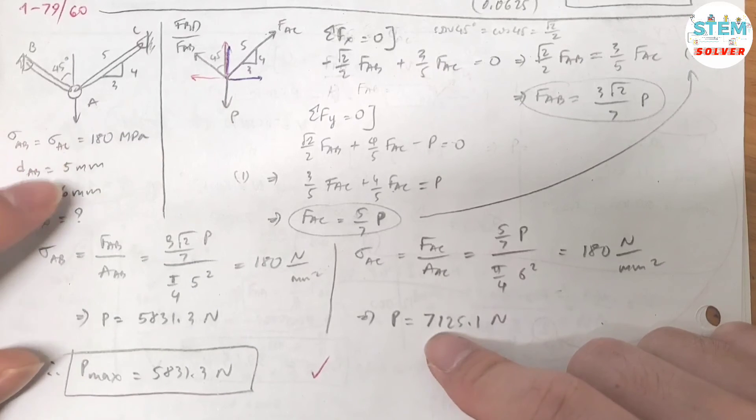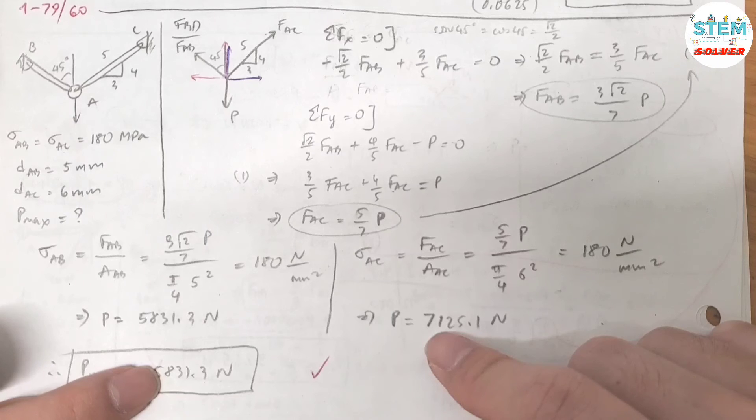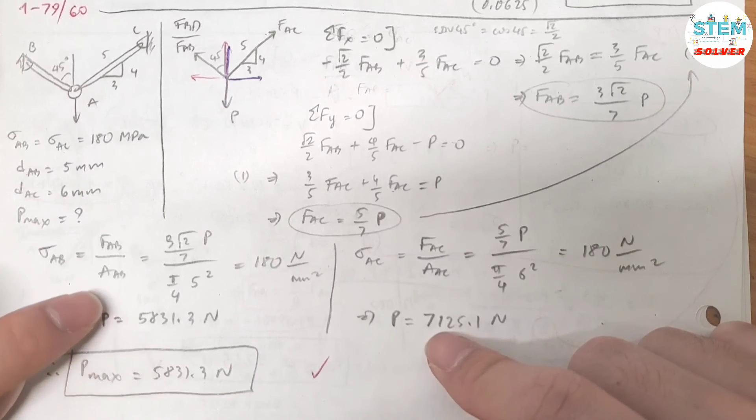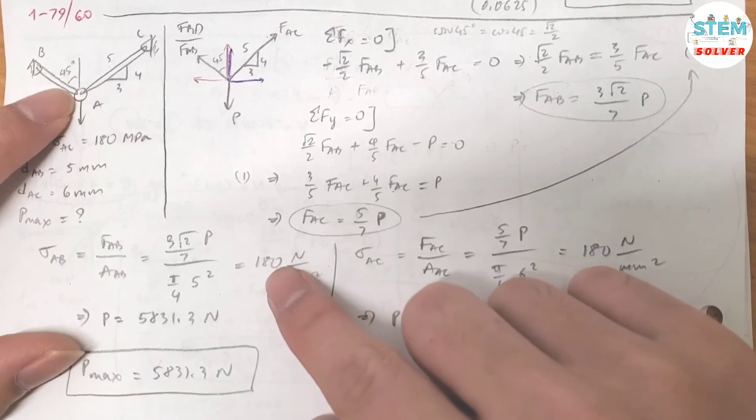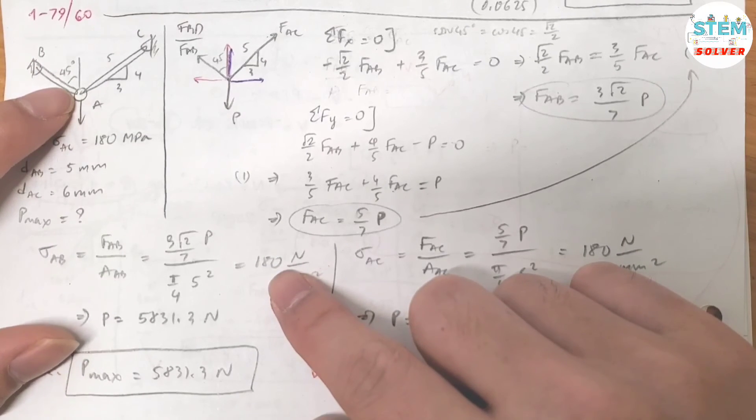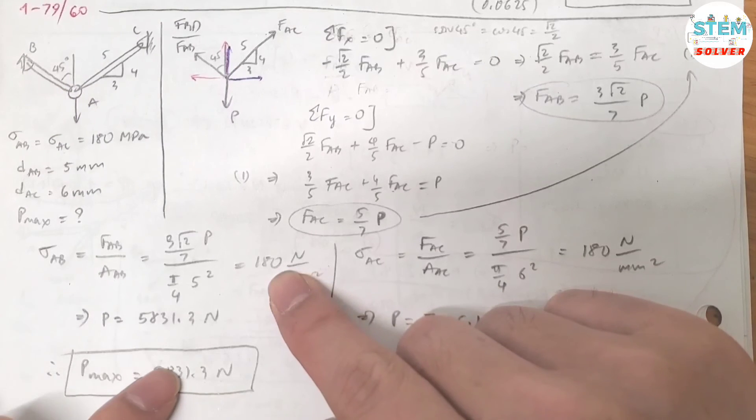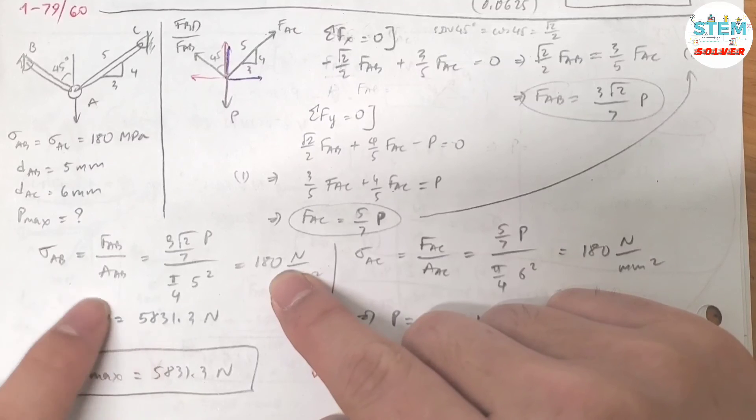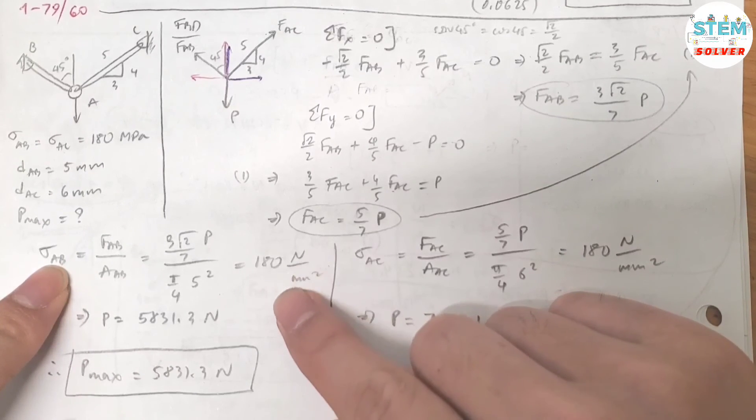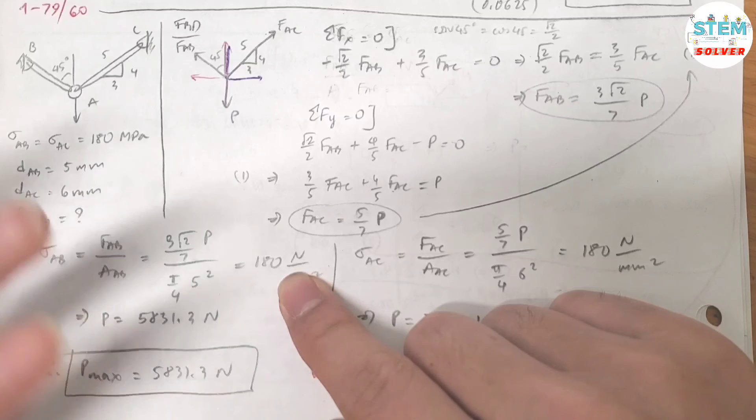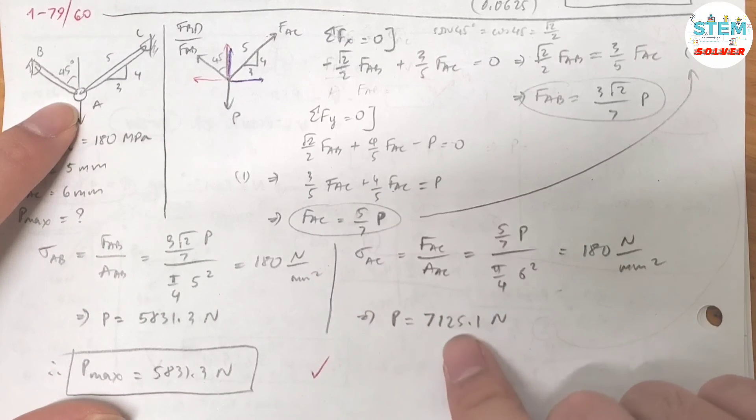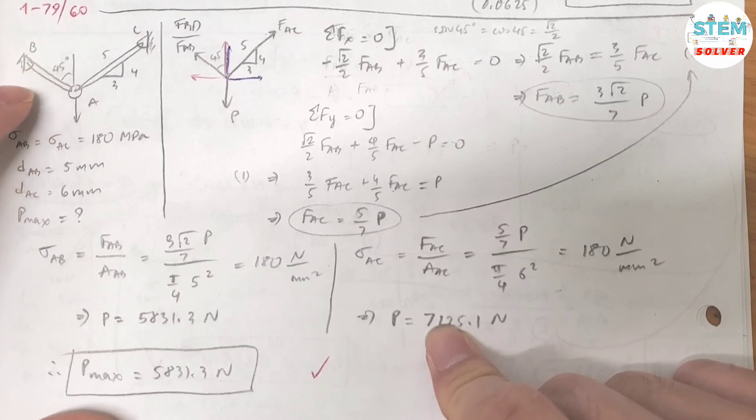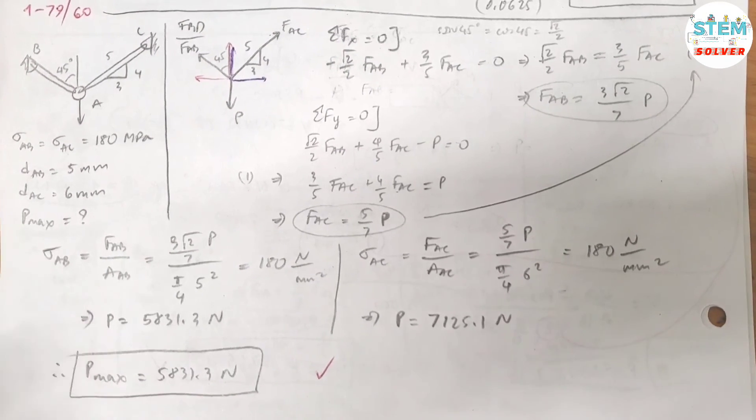Why? Because when P reaches this force, the maximum normal stress in FAB is 180 and it reaches the allowable normal stress. If you apply a higher force P initially, then the allowable normal stress will be greater than 180 and there's no way it can reach this force because the system already failed. So hope that makes sense. That's it.